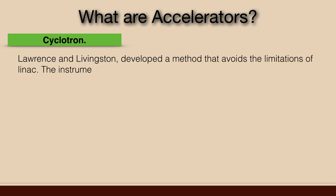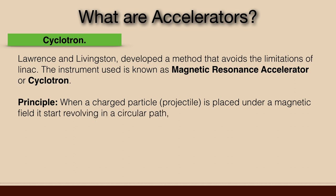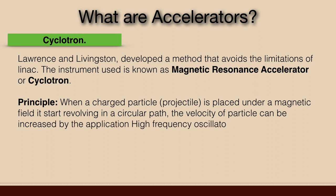The instrument used is known as magnetic resonance accelerator or cyclotron. The main principle is when a charged particle or projectile is placed under the magnetic field, it starts revolving in a circular path. The velocity of the particle can be increased by the application of high-frequency oscillator in the direction of particle's motion.